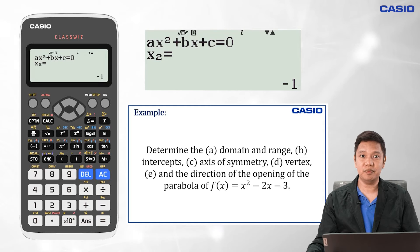Our y-intercept is the constant term in our function, so our y-intercept is negative 3. We all know that the domain of any quadratic function is the set of real numbers, but for our range, we need to determine the value